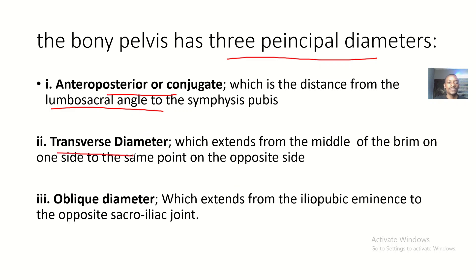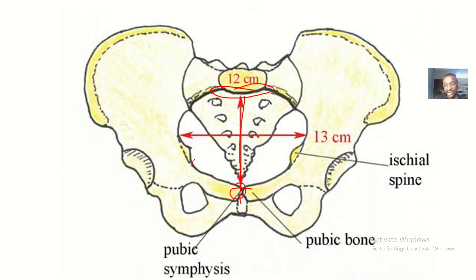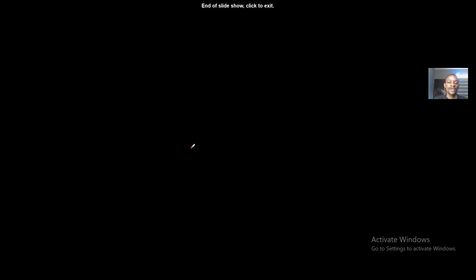The transverse diameter is a diameter which extends from the middle of the brim on one side to the same point on the opposite side — so middle of the brim on one side to the same point on the opposite brim.